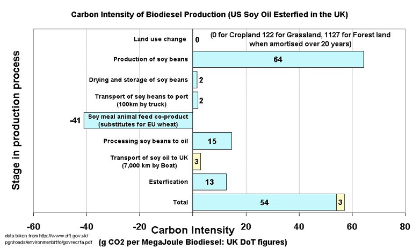However, there is concern that increased feedstock production directly affects the rate of deforestation. Such clearcutting causes carbon stored in the forest, soil, and peat layers to be released. The amount of greenhouse gas emissions from deforestation is so large that the benefits from lower emissions caused by biodiesel use alone would be negligible for hundreds of years. Biofuel produced from feedstock such as palm oil could therefore cause much higher carbon dioxide emissions than some types of fossil fuels.